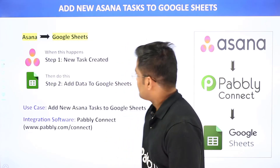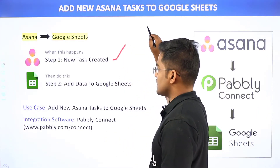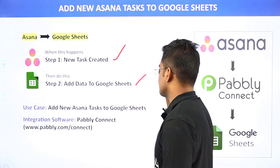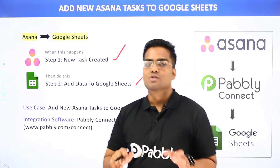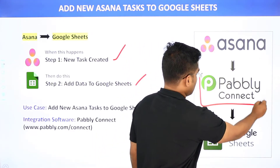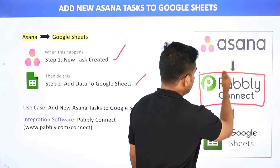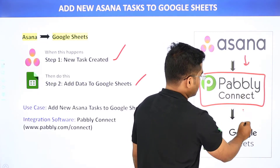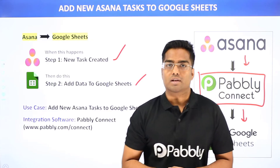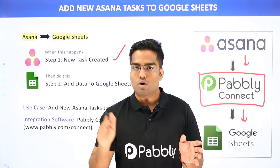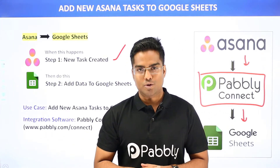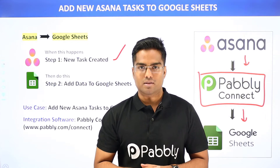When a new task is created in Asana, it will automatically add this data to Google Sheet. We will be using Pabbly Connect to integrate Asana and Google Sheet. The best part of using Pabbly Connect is there is no need for coding skills or programming knowledge. It can be done easily — let me show you on my screen.